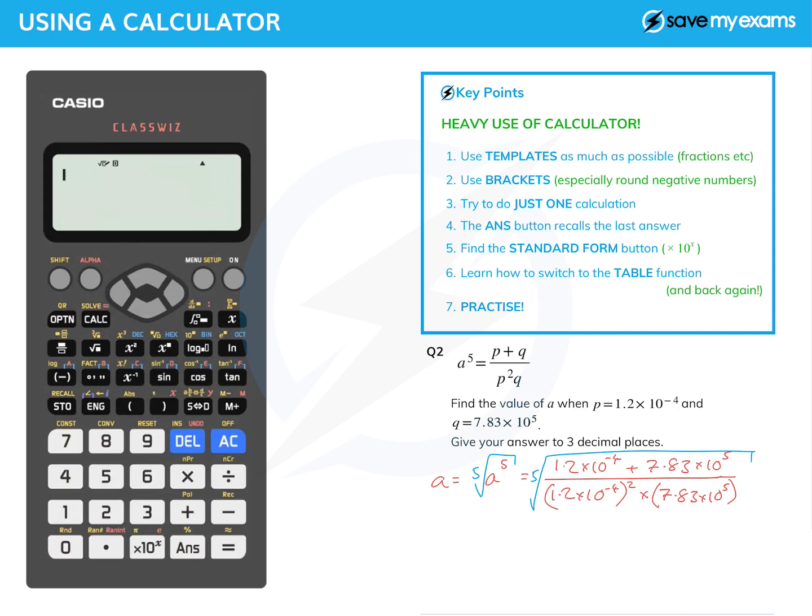The biggest template I need is the fifth root. Above the x to the power of button there is a root button, so I do shift x to the power of and I get a little flashing number where I put the five. I'm going to use the right arrow key to get inside it. Now I need a fraction and I just start typing 1.2 times 10 to the power of minus 4. It looks a little bit odd but it does work. Plus 7.83 times 10 to the power of five.